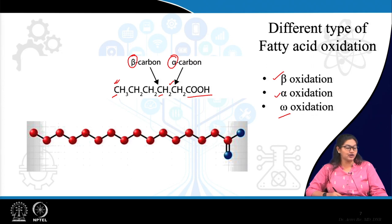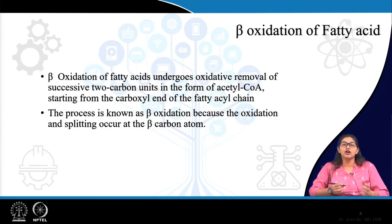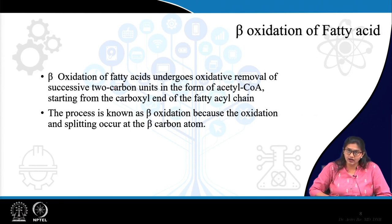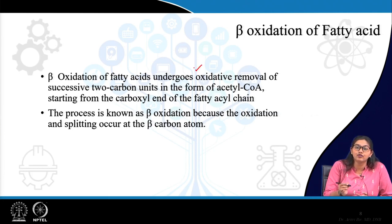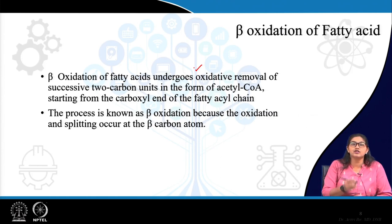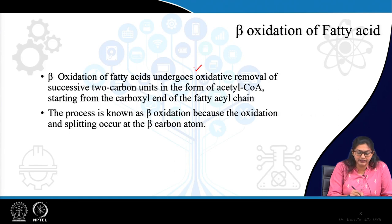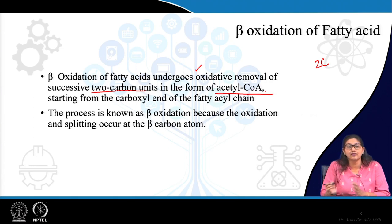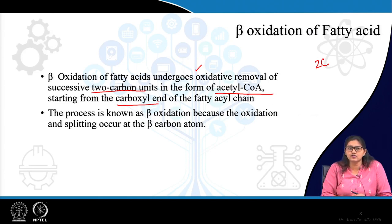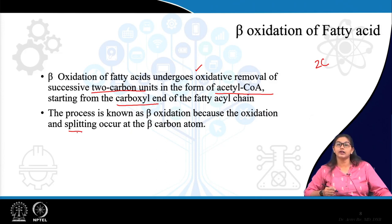Beta oxidation of fatty acid is basically oxidation of the carbon positioned in the beta region, with oxidative removal of successive 2-carbon units. In each cycle, there is removal of 2-carbon units in the form of acetyl coenzyme A, starting from the carboxyl end — from the beta position. This process is known as beta oxidation because there is oxidation at the beta carbon position, where the splitting occurs.